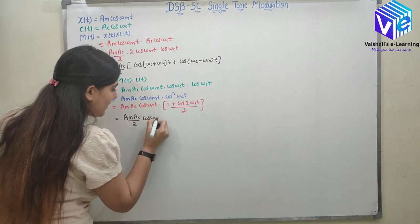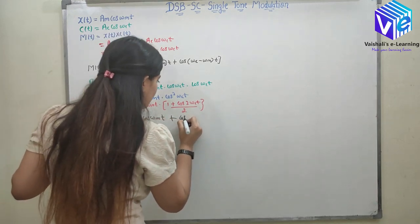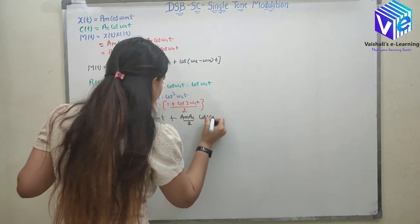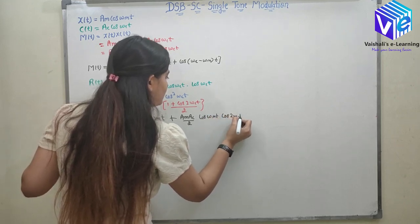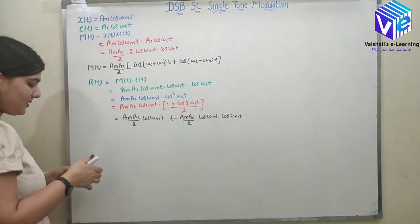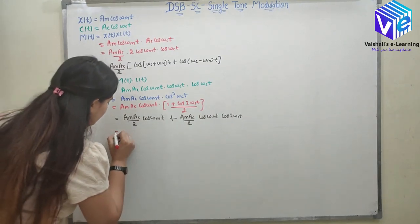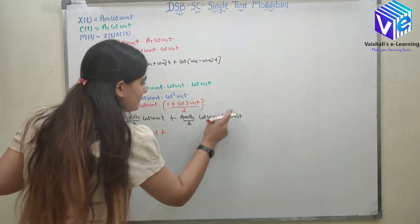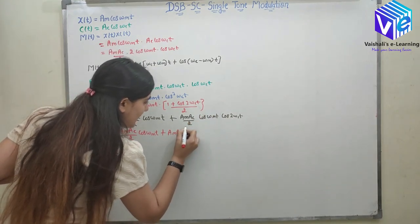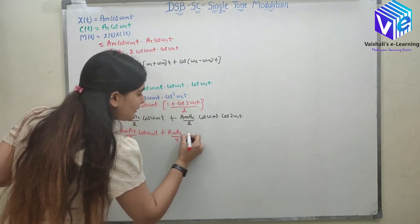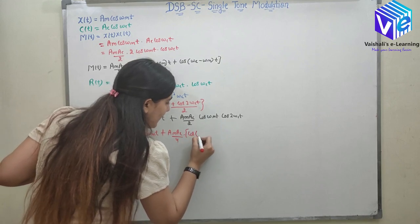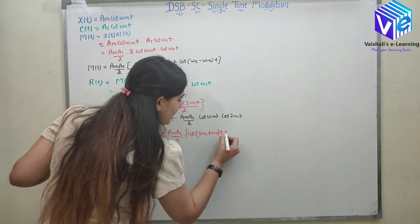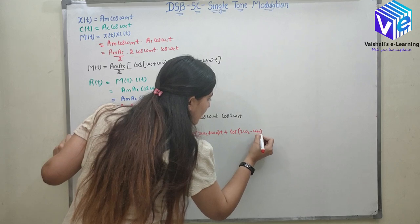Expanding r(t): r(t) = (Am·Ac)/2 · cos(ωm·t) + (Am·Ac)/2 · cos(ωm·t)·cos(2ωc·t). Applying 2cosA·cosB again, the second term becomes (Am·Ac)/4 · [cos(2ωc+ωm)t + cos(2ωc−ωm)t].